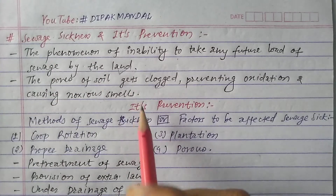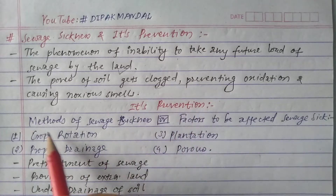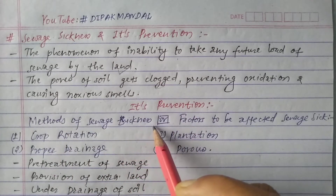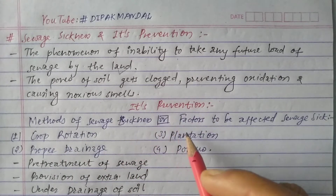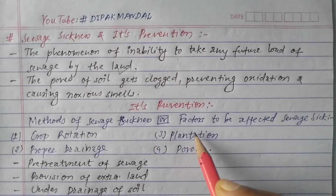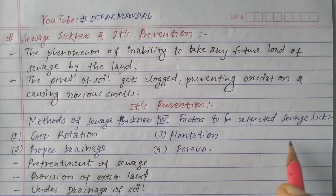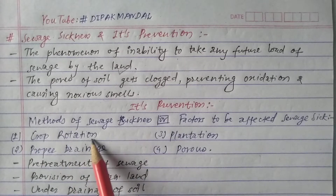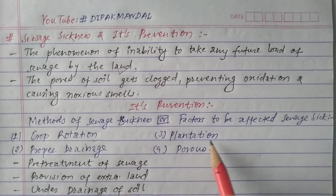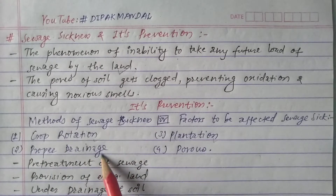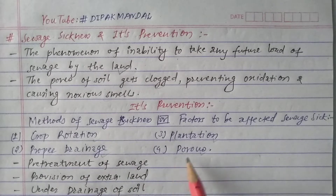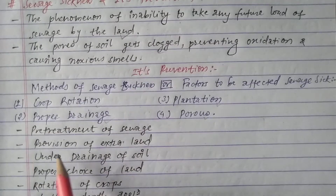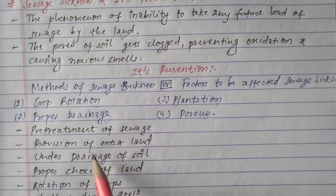The prevention of sewage sickness — also called methods of sewage sickness or factors affecting sewage sickness — includes: crop rotation, plantation, proper drainage, porous soil selection, and pre-treatment of sewage.